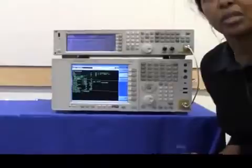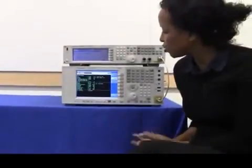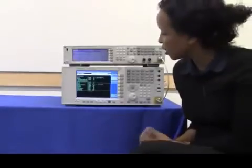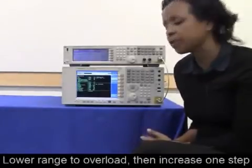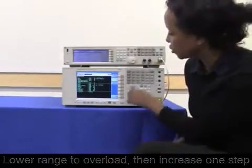When the range is too low, it will overload the PXA's ADC. When the range is too high, it will introduce noise, which will degrade the EVM. A good rule of thumb is to lower the range until you see an overload message, and you increase it by one step.